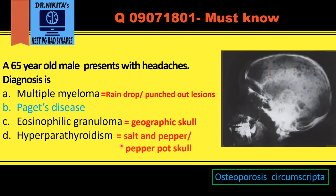Hyperparathyroidism presents as salt and pepper or pepper pot skull, which was a recently asked exam question. Like pepper, there are tiny black dots — tiny lytic lesions. So that is the pepper part in hyperparathyroidism: salt and pepper or pepper pot skull. These are the important lytic lesions in the skull which are very frequently asked in exams.